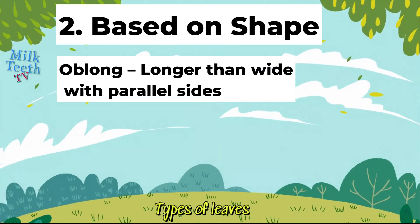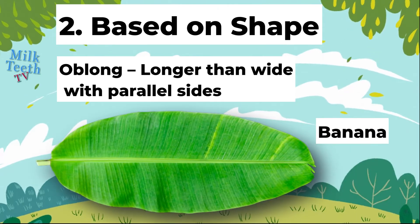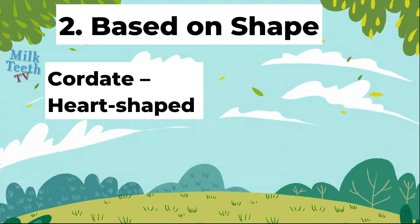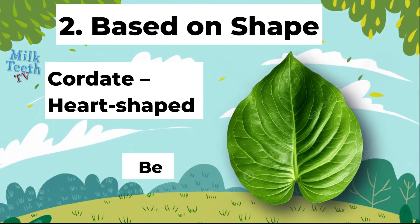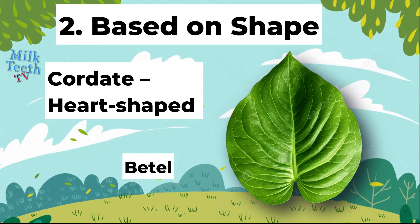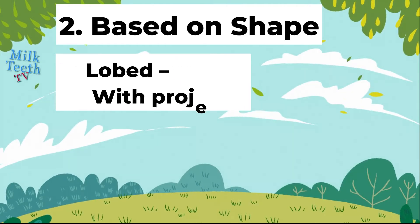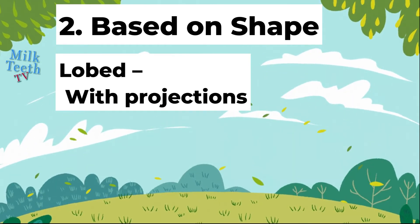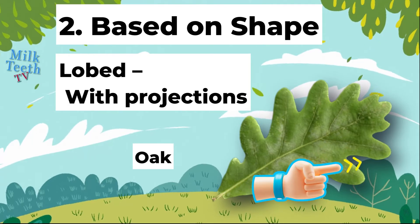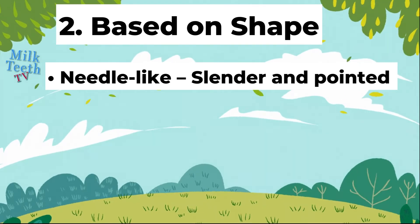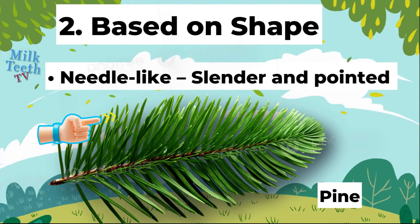Leaves can be oblong — that is longer than wide, with parallel sides, for example a banana leaf. Leaves are also of heart shape; these leaves are known as cordate-shaped leaves, for example a peepal leaf. Leaves can be lobed with projections — these are irregular leaves with lobes around, for example an oak leaf. Leaves can also be needle-like, slender and pointed, for example pine leaves.